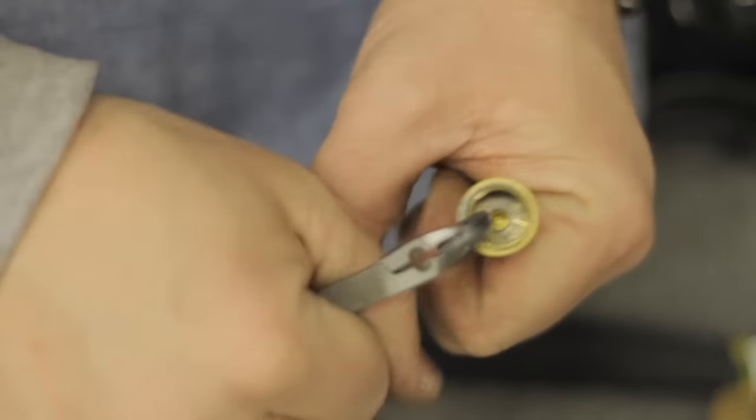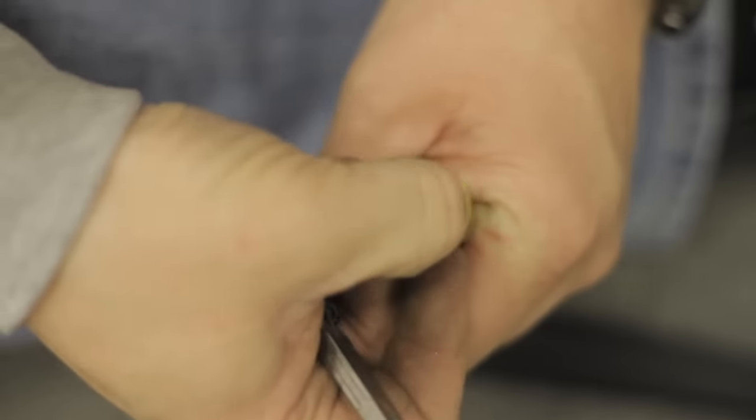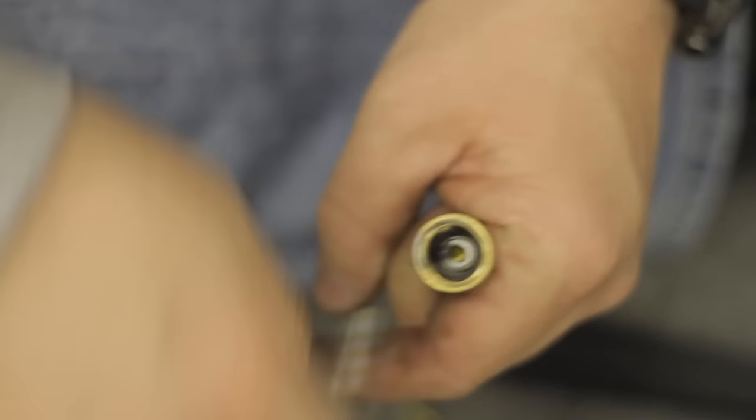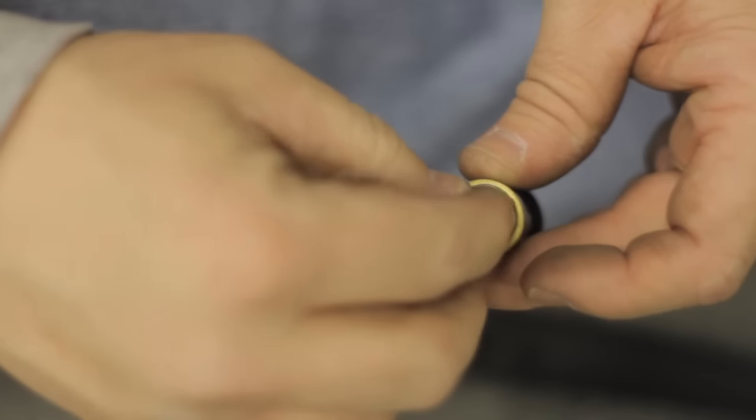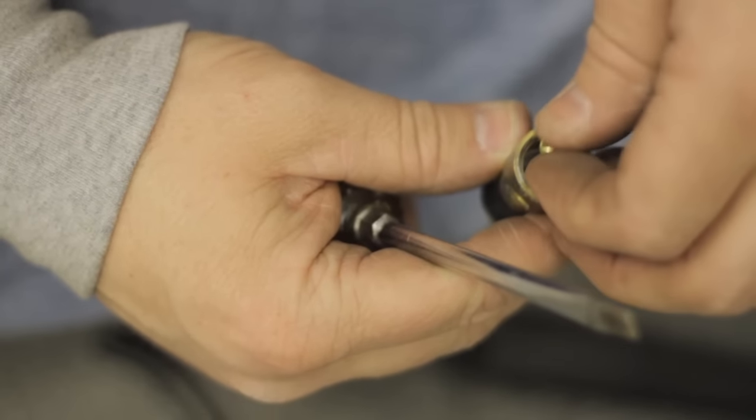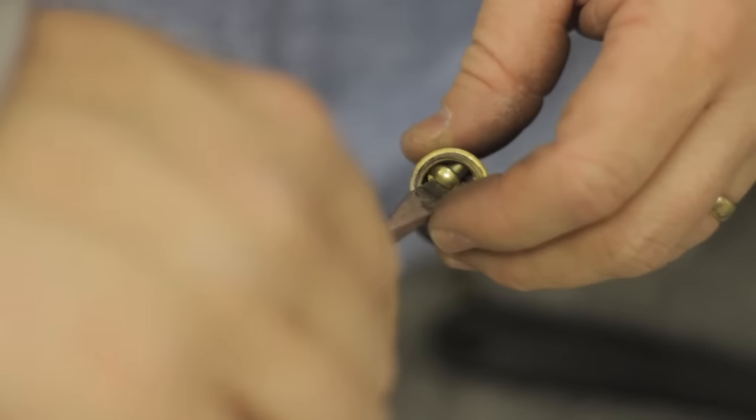Once you have your new washer, you've matched up the proper size, it goes back in. Sometimes they can be a little tricky to get down in the little hole there. Put your screw back in and tighten your screw back up.